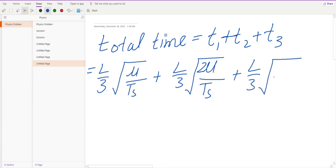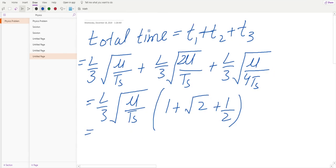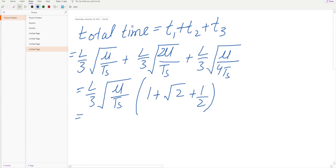I can see that there's a pattern in these values. I can take L over 3 square root mu divided by tension of string as common, and then I'm left with 1 plus square root of 2 plus one-half, which is equal to 3 over 2 plus square root of 2. And this is my answer.